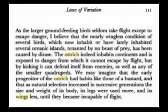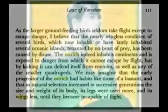Darwin continues: 'We may imagine that the early progenitor of the ostrich had habits like those of a bustard, and that as natural selection increased in successive generations the size and weight of its body, its legs were used more and its wings less, until they became incapable of flight.' Interesting that Darwin assumes that all wings are good for is flight — or so Max claims.